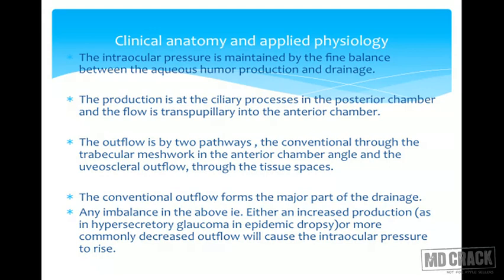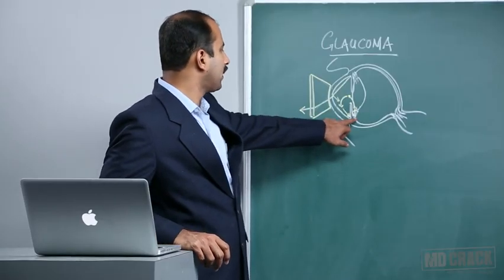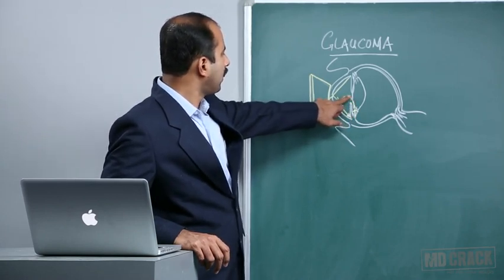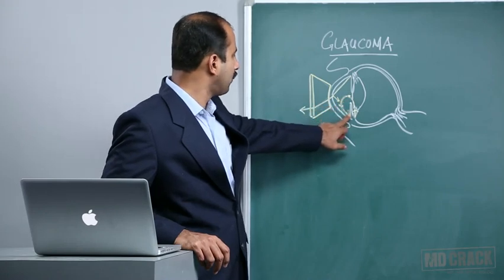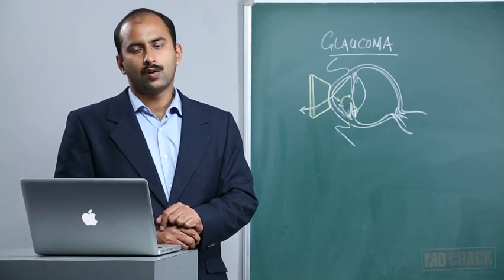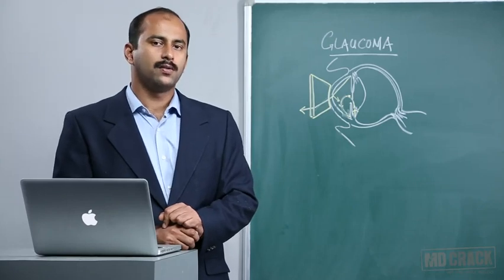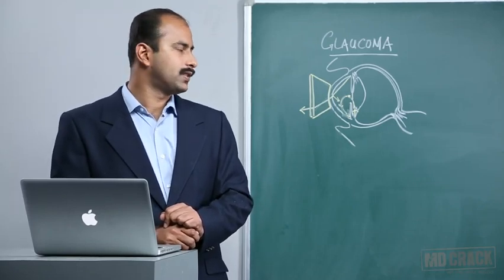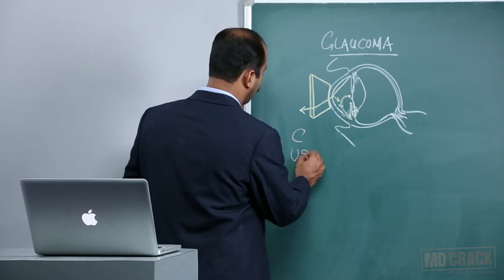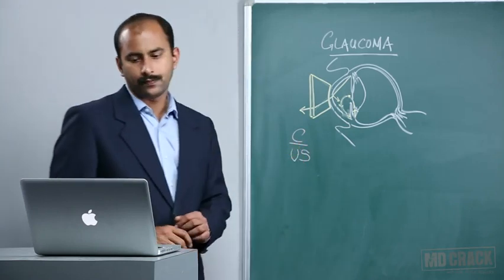Starting with clinical anatomy and physiology to understand the basics better: intraocular pressure is maintained by the fine balance of aqueous secretion from the pars plicata of the ciliary body, the transpupillary flow of aqueous into the anterior chamber, and the final drainage from the conventional pathway through the anterior chamber angle. Besides this, there is an unconventional outflow channel — the uveoscleral outflow — which can assume great significance when modified for treatment purposes. The conventional outflow forms the majority of drainage of aqueous from the eye.